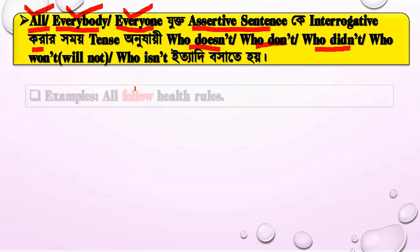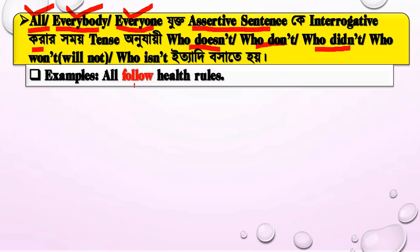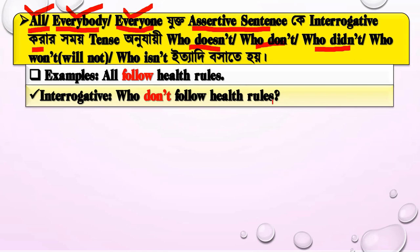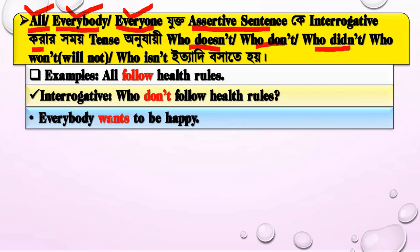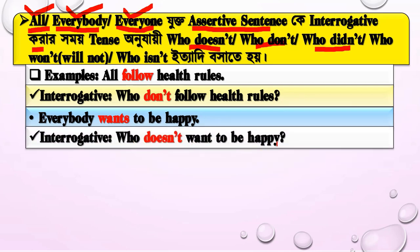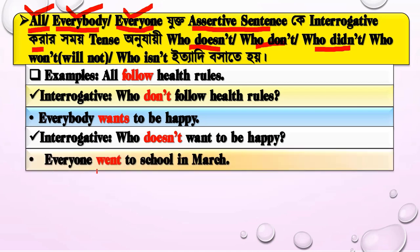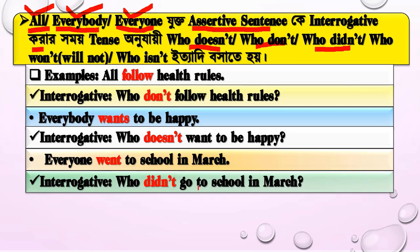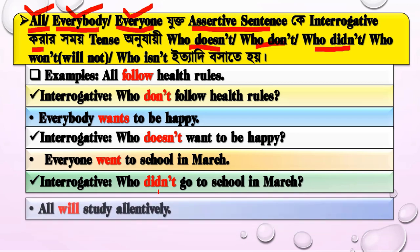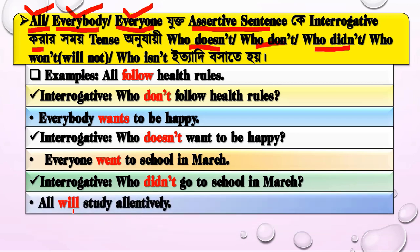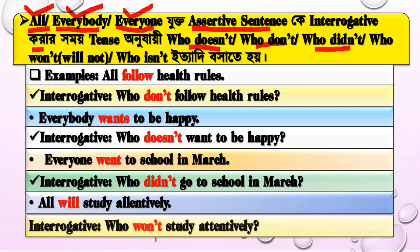Let's look at examples. 'All follow health rules' becomes 'Who doesn't follow health rules?' 'Everybody learns' becomes 'Who doesn't want to be happy?' 'Everyone went to school in March' becomes 'Who didn't go to school in March?' 'All will study attentively' becomes 'Who won't study attentively?'